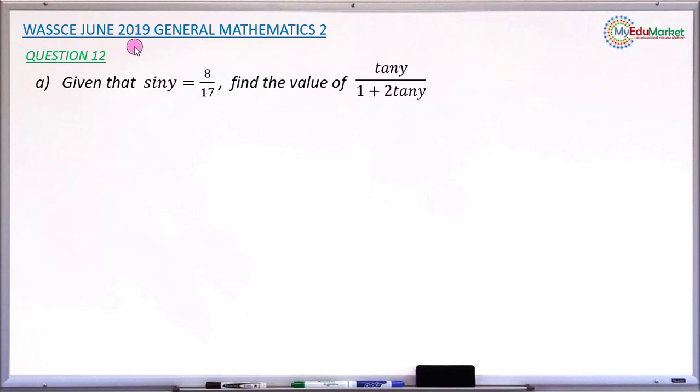This is WASSCE June 2019, General Mathematics Paper 2, and we are answering question number 12a. The question reads: given that sin y equals 8 over 17, you are asked to find the value of tan y divided by 1 plus 2 tan y. This is what you are asked to find its value.